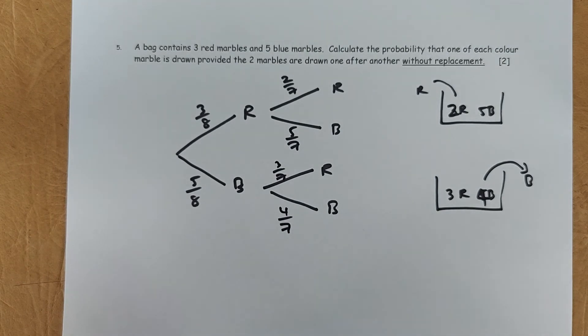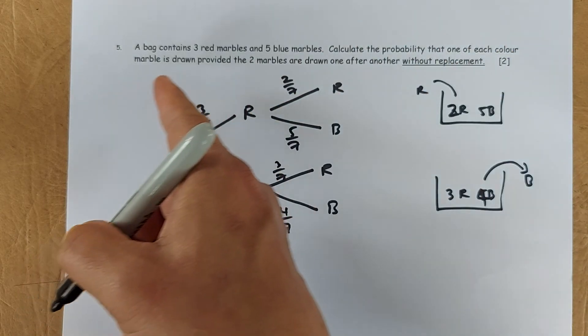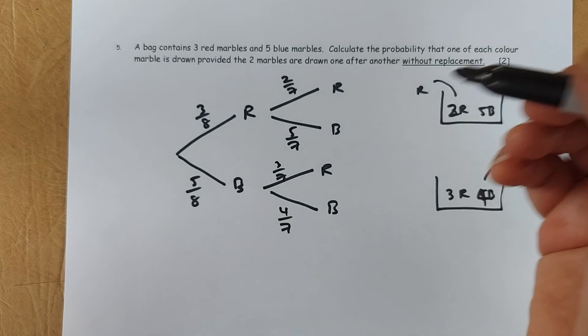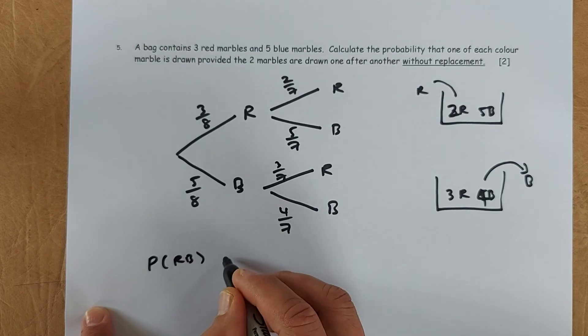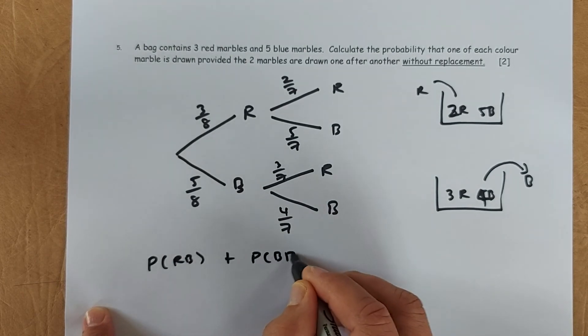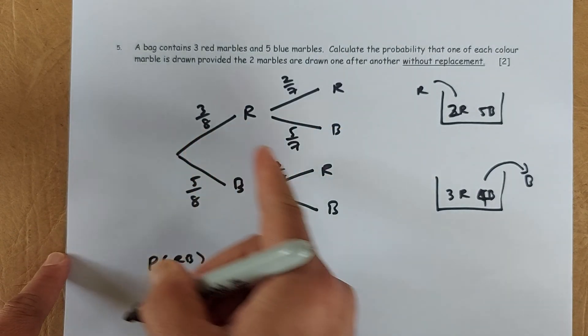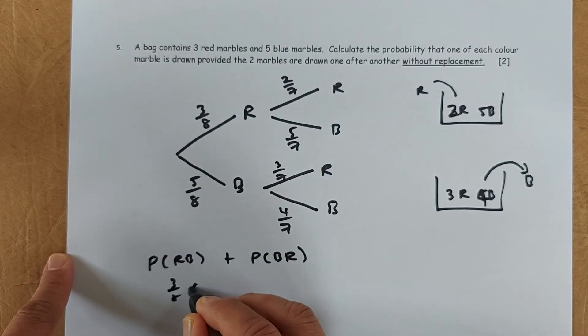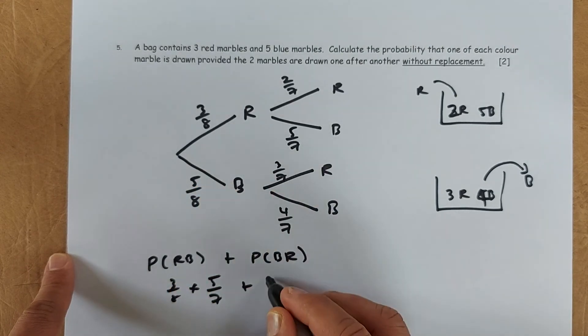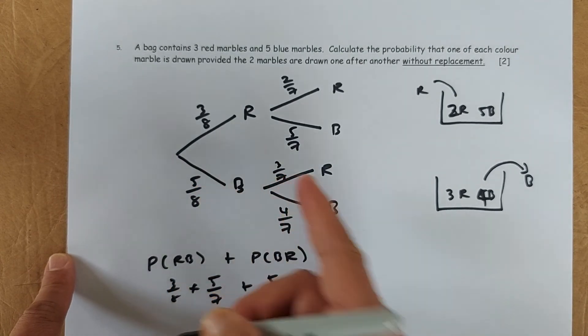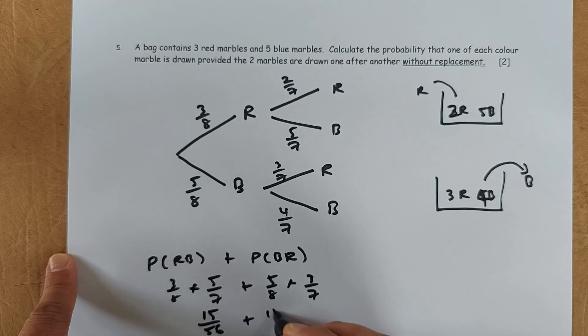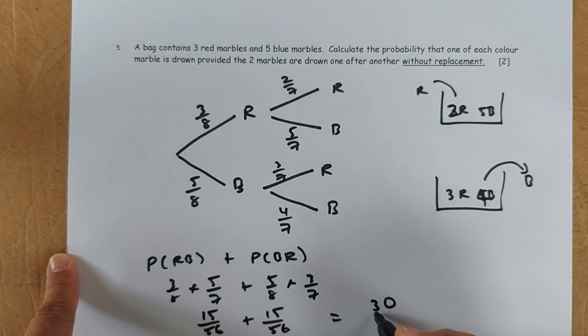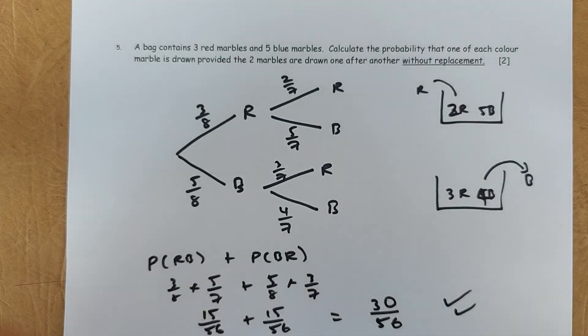Now, the next question. What is the probability they're asking you, what is the probability that each color marble is drawn, provided they are drawn one after another without replacement. So it could be probability of red then blue, or probability of blue then red. So you add them up together. So the red then blue is going to be 3/8 times 5/7, and the same thing, 5/8 times 3/7 for blue then red. So the answer is going to be 15 over 56 plus 15 over 56. Put in your calculator, the answer is going to be 30 over 56. And that will give you 2 marks in the exam.